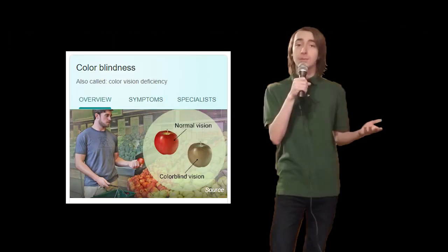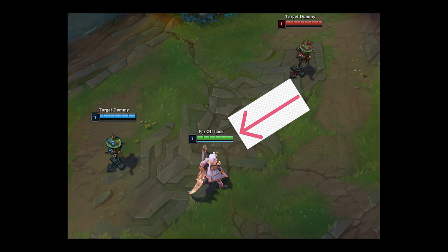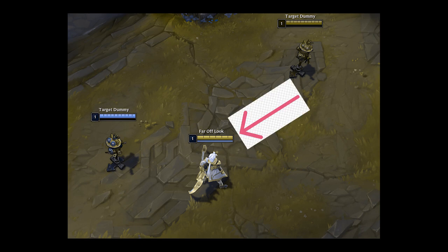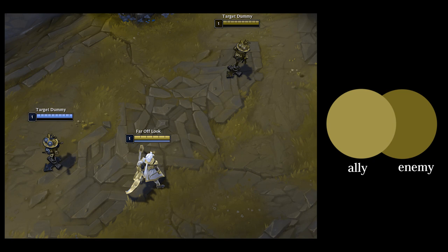To better understand how colorblindness affects the appearance of video games, let's look at a practical example. In League of Legends, allies have green health bars and enemies have red health bars. If a player had deuteranopia, then the game would look something like this. Ally health bars now look really similar to enemy health bars with only a mild difference in value, making it pretty difficult to tell if a player is an enemy or not at a glance.